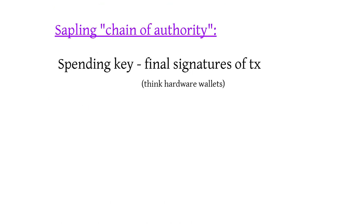What is this chain of authority in the Sapling key structure? The master key is the spending key. The spending key is what does the final signatures on a transaction — that's all it needs to do: no SNARK proving, just a digital signature. Because of that, you can think of this spending key as being stored on some very lightweight hardware wallet that you're never connecting to the internet.